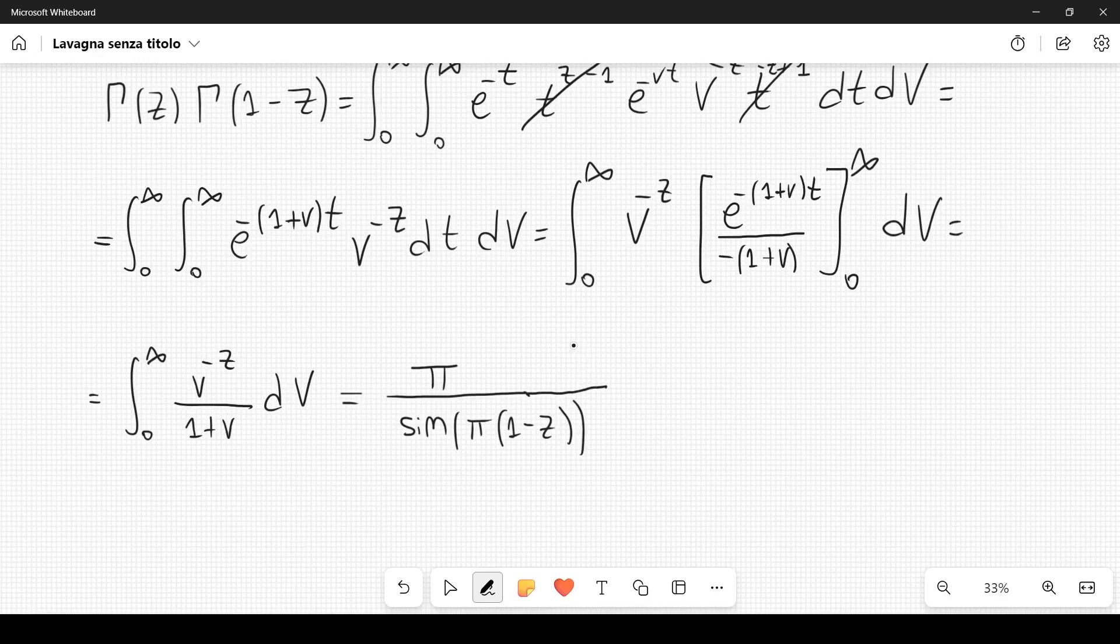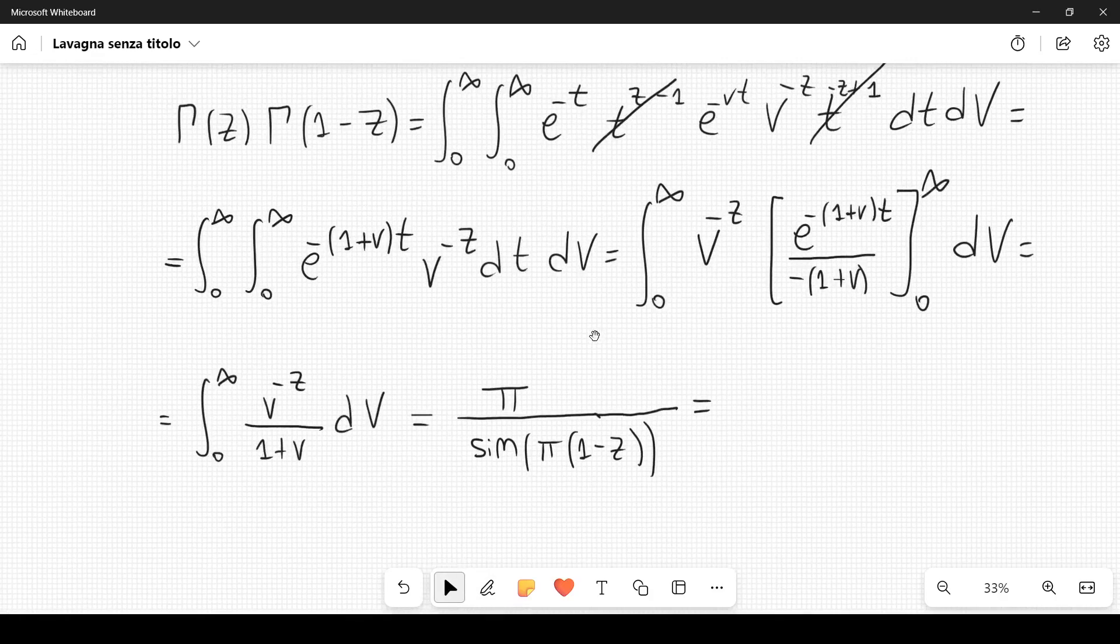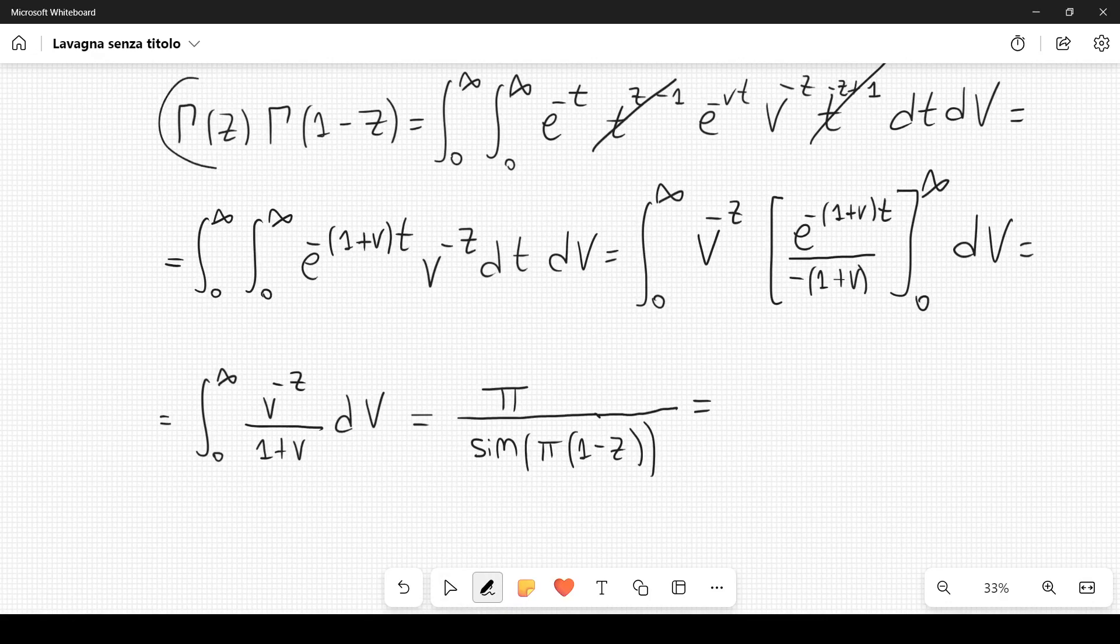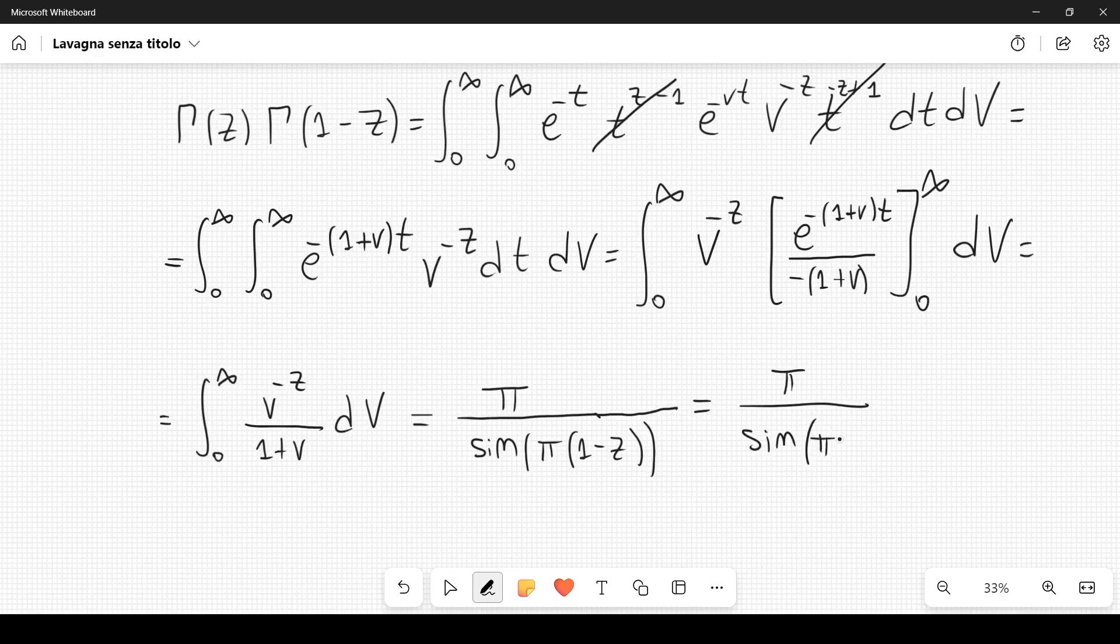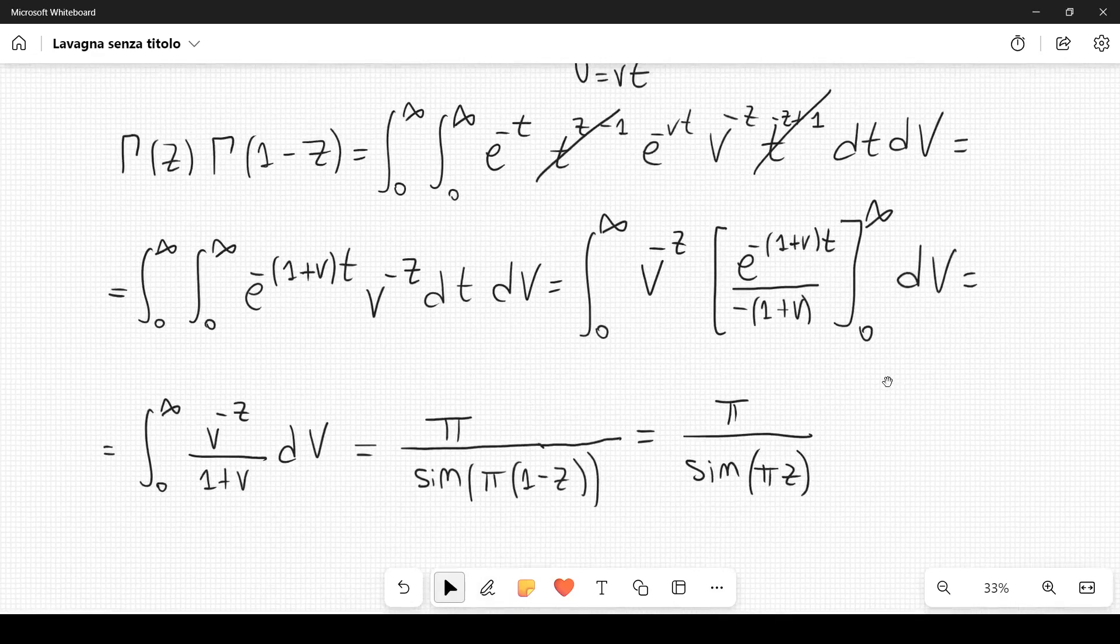And now for symmetry reasons, since this is equal to this, you can see that if you change z to 1 minus z, the part on the left of the equality is symmetric. Therefore, this can also be written as pi divided by sine of pi z, like this.